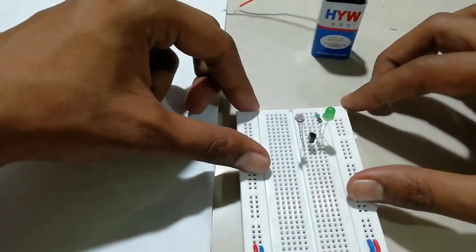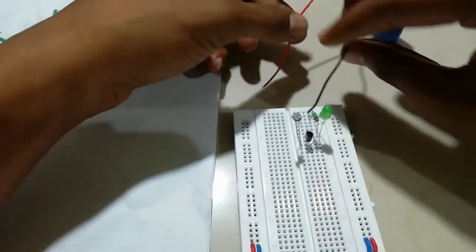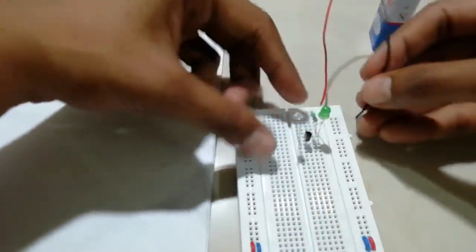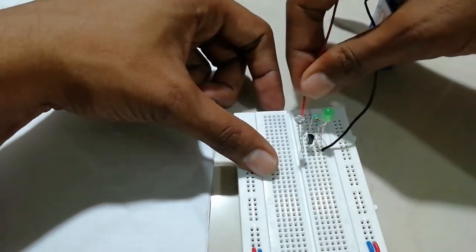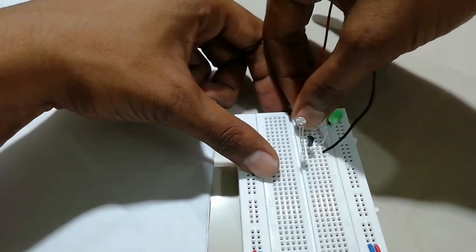Our circuit is ready. Now we will give power supply. We will connect negative to emitter and positive to transistor... sorry, resistor.